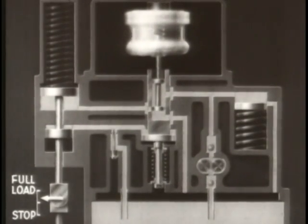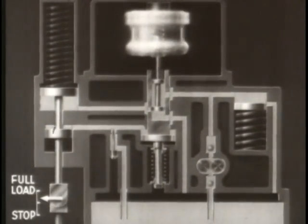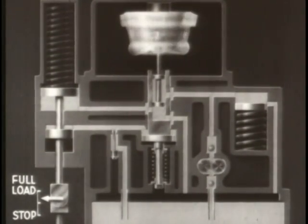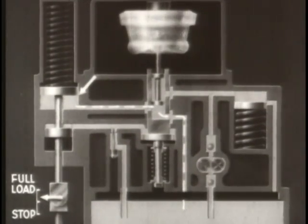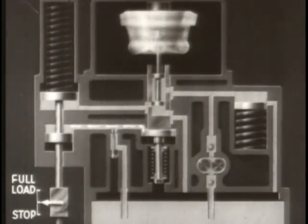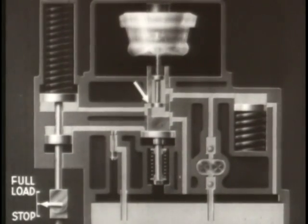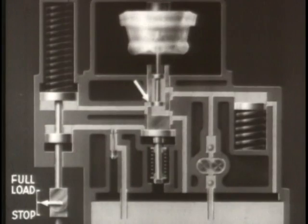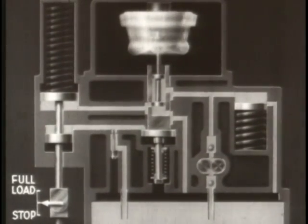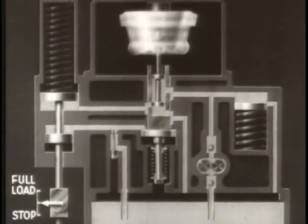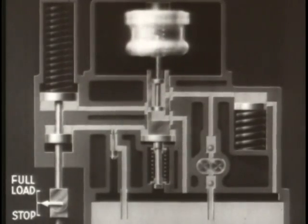Now, if the load suddenly decreases and the engine starts to race, the flyweights move outward, lifting the pilot valve plunger. Oil drains from the power cylinder, allowing the power piston to move the fuel control, decreasing the amount of fuel injected. In the meantime, the pilot valve bushing has moved upward, closing the port in the pilot valve. As the engine speed returns to normal, the flyweights and the plunger and bushing again resume their central position.